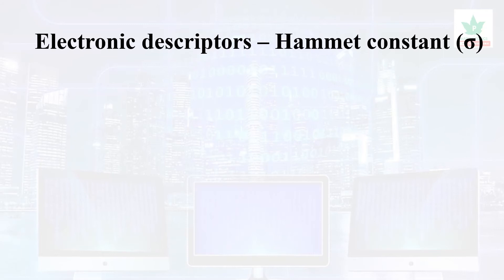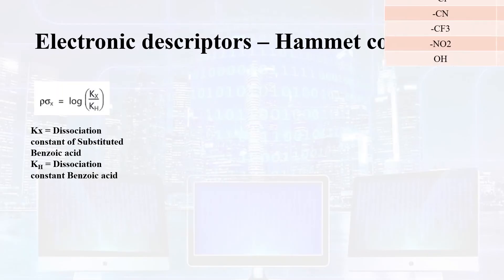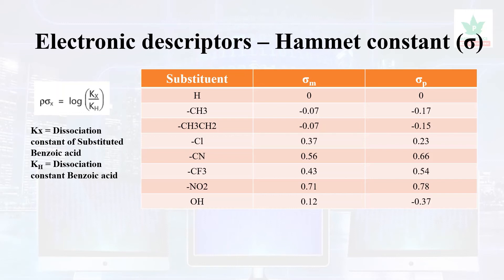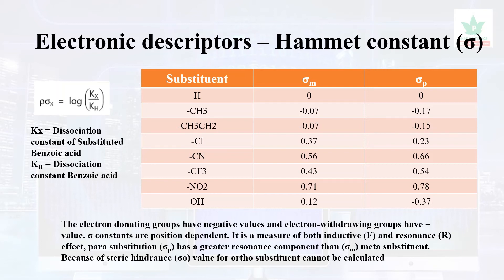This is an electronic descriptor — the Hammett constant sigma (σ). It is defined as the dissociation constant of the substituted compound relative to the dissociation constant of the unsubstituted compound. Benzene is used as the reference. What is meta substitution and para substitution? If you observe, electron-donating groups give negative sigma values. This involves inductive and resonance effects. In para substitution, there is a greater resonance effect. In ortho position there is also a Hammett constant.